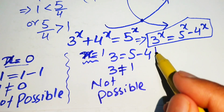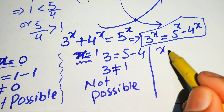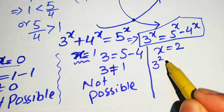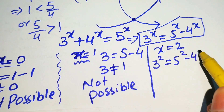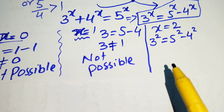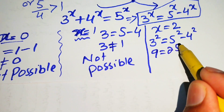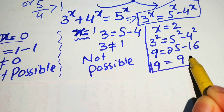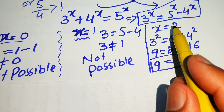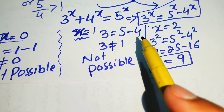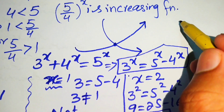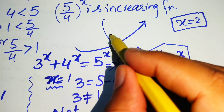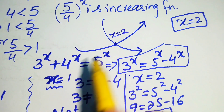Now we check at x equals 2. Substituting x = 2 gives 3 squared equals 5 squared minus 4 squared, which is 9 equals 25 minus 16, and 25 minus 16 is 9. So 9 equals 9. This confirms that x equals 2 is the solution of this equation. The point of intersection is also at x equals 2.